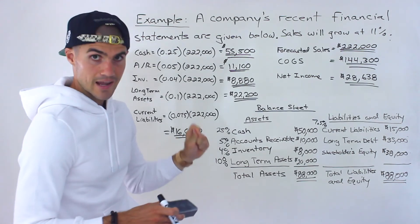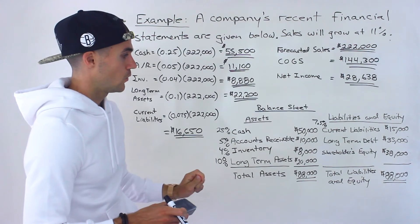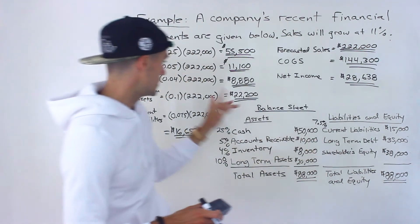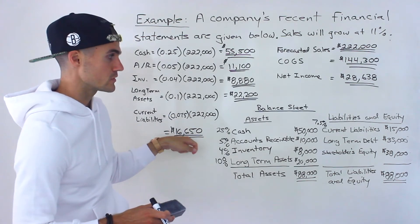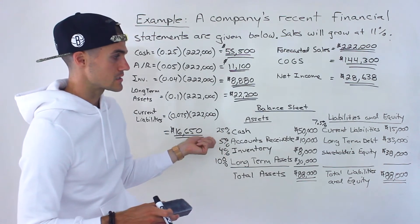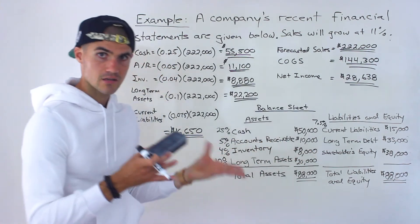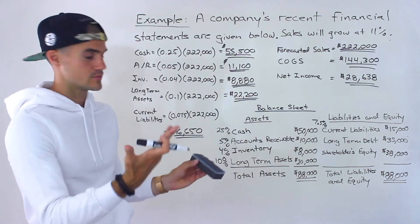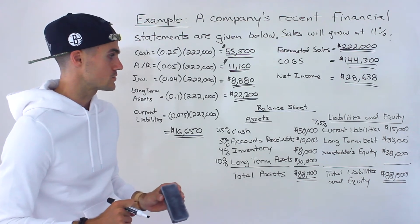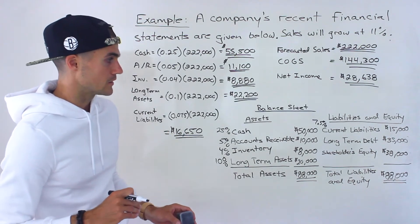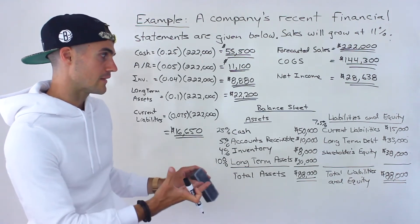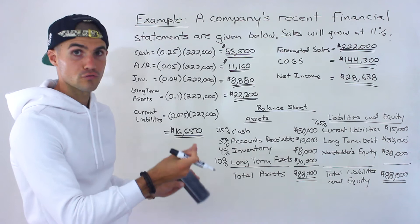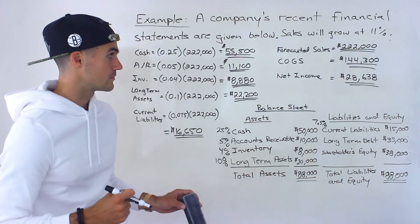Now in Part B, they're asking that if the payout ratio is 80%, what will be the forecasted shareholders' equity? Notice we didn't forecast shareholders' equity using the percentage of sales method, because shareholders' equity depends on the retention ratio, which directly depends on the payout ratio. We'll have to get that manually in Part B. Then, depending on what we get, we'll need to find if there's any external financing needed.